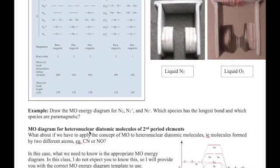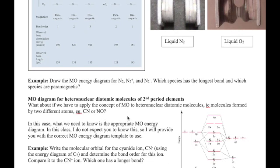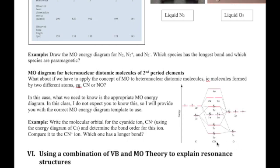What about heteronuclear diatomic molecules? In general chemistry, students aren't expected to independently solve the correct MO diagram for these molecules. If asked about these species, you'll usually be given the relevant diagram or enough information to know which diagram to use — typically one of the two shown earlier for homonuclear species.